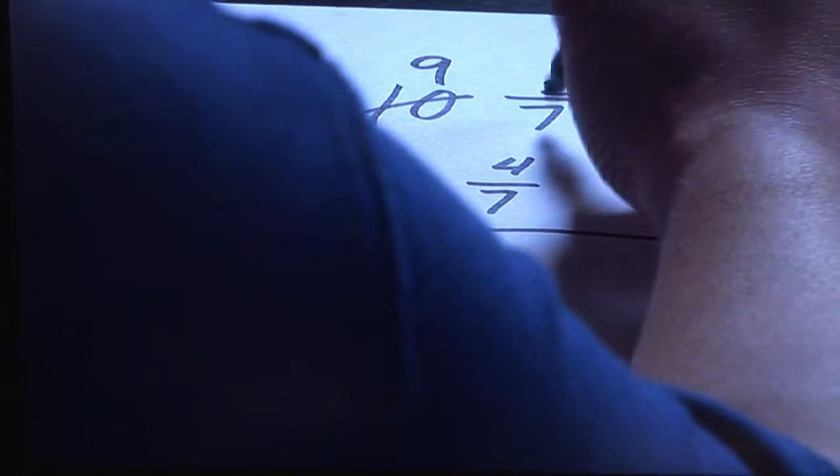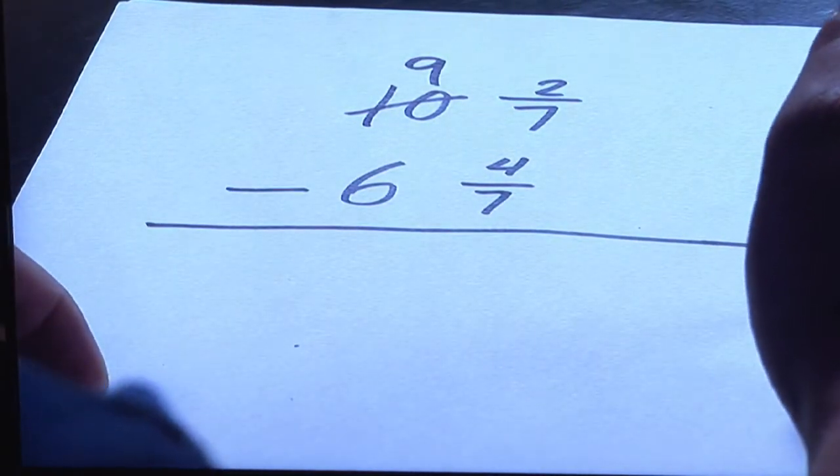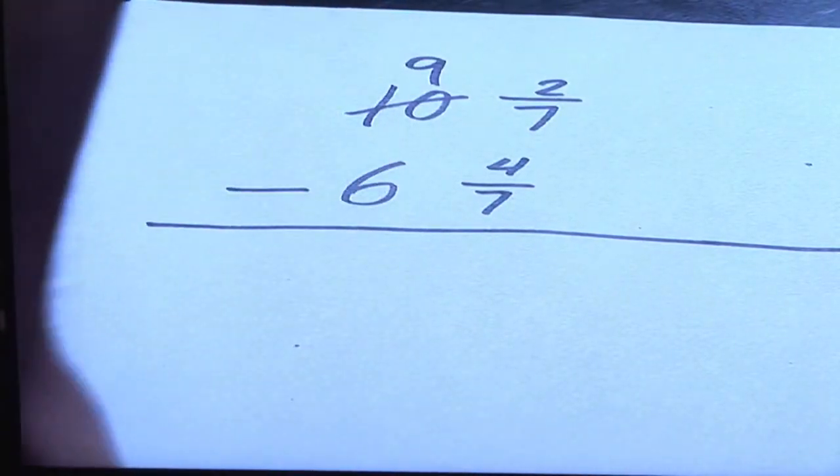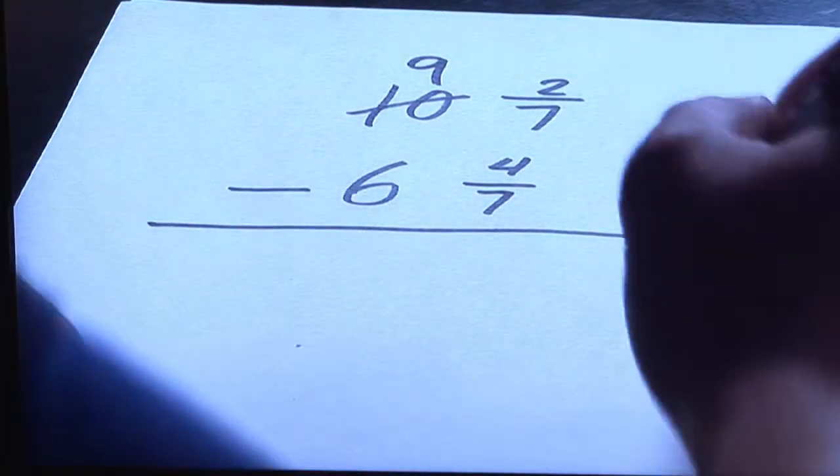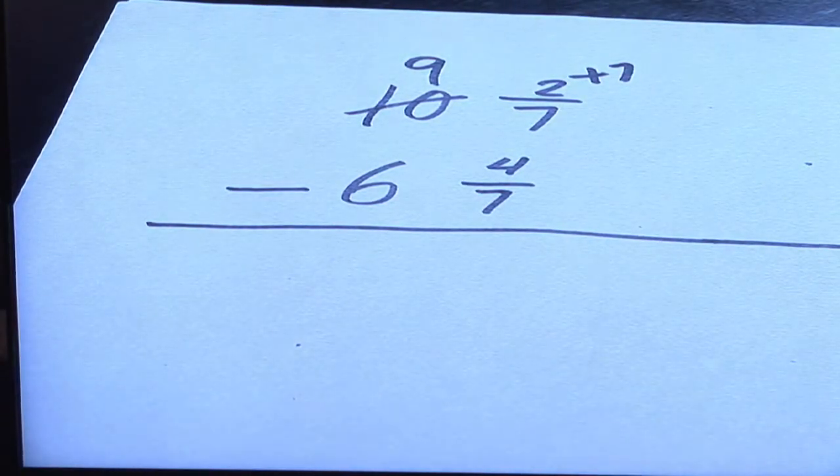Now, this is where the denominator comes in. Because the denominator is seven, that's how many additional pieces you're going to have. So that means the two, which is the numerator up here, now adds seven extra pieces to help you.